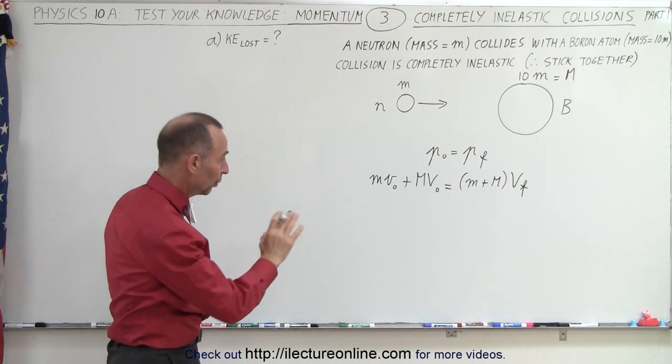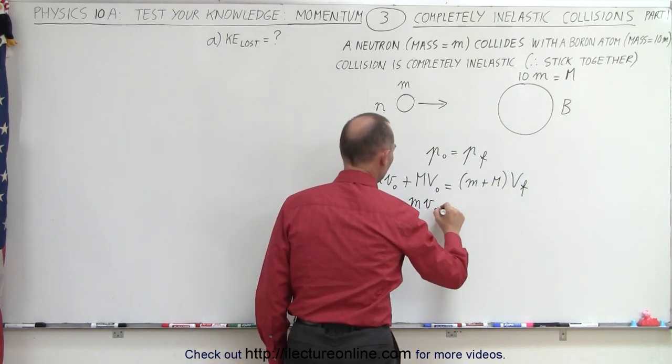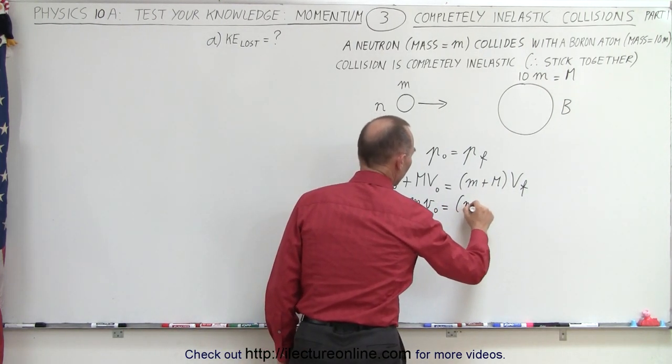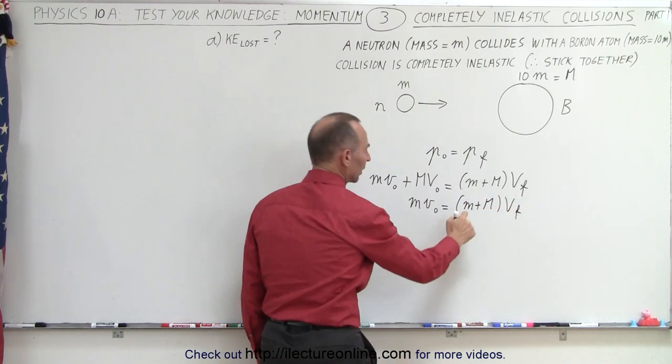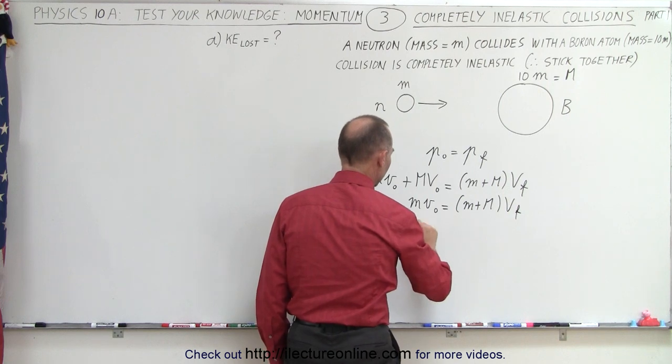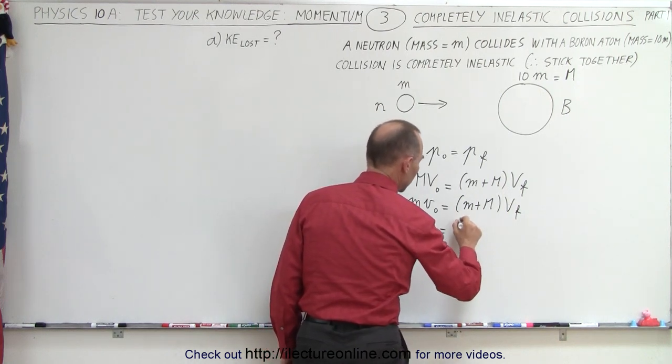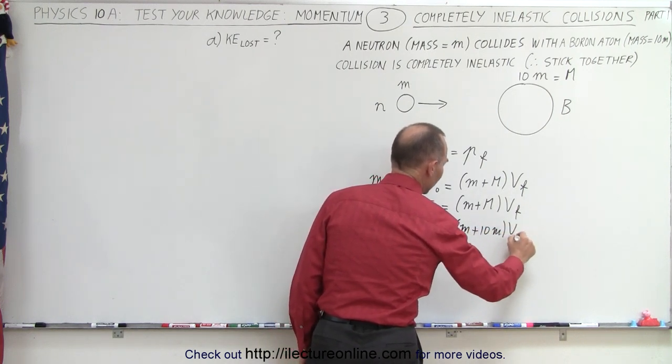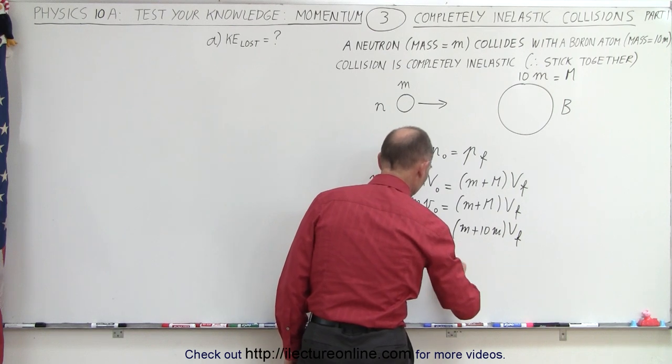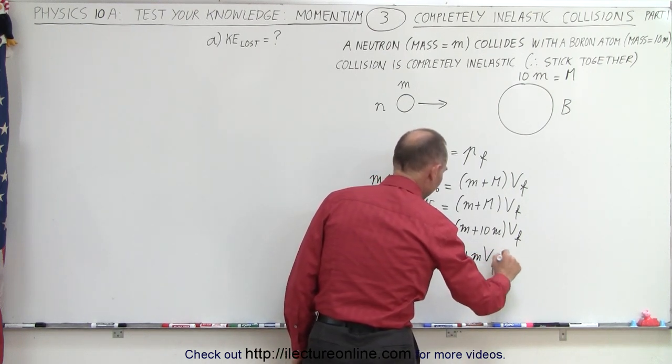Now, of course, v initial for the boron is zero, so this becomes mv initial equals the sum m plus big M times v final. Now, plug in what big M is equal to. We could say that m times v initial equals m plus 10m times v final, or m times v initial equals 11m times v final.